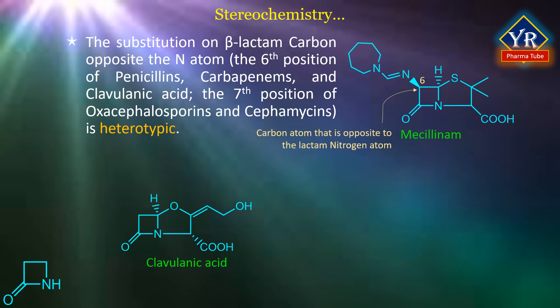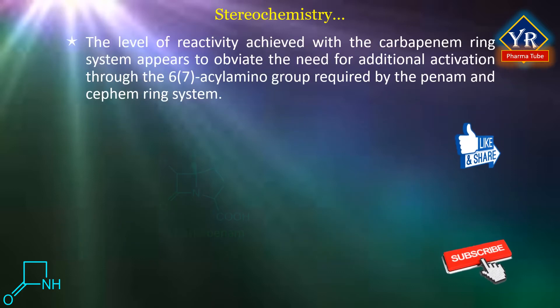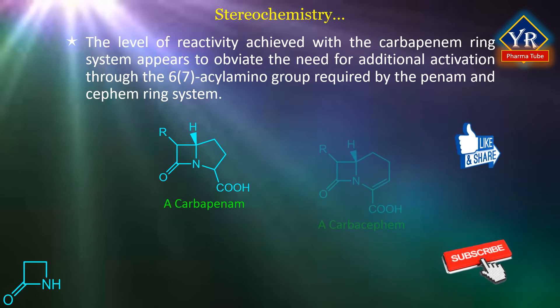In the light of this, the relatively low antibacterial activity of clavulanic acid, where there is no sixth position substituent, is not too surprising, but the high level of antibiotic activity exhibited by thienamycin and its congeners, for example a 6-hydroxyethyl substituent either alpha or beta, is unexpected. This apparent anomaly illustrates the interrelationship of chemical reactivity of the beta-lactam ring with biological activity. The level of reactivity achieved with the carbapenem ring system appears to obviate the need for additional activation through the 6-7-acyl amino group required by the penam and cefam ring systems.